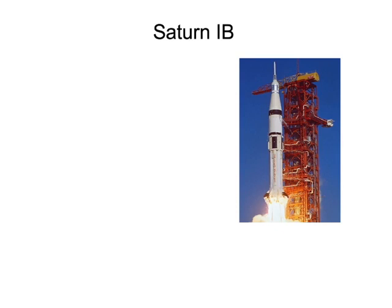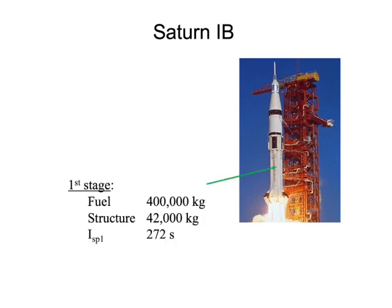The first stage of the Saturn 1B is enormous — 400,000 kilograms (400 metric tons) of fuel, and about 42,000 kilograms of structure including rocket motors, tanks, and pumps. The fuel is RP-1, basically a high-grade kerosene — an oil-based fuel — combined with liquid oxygen. The specific impulse at sea level for the first stage is 272 seconds, which is pretty good.